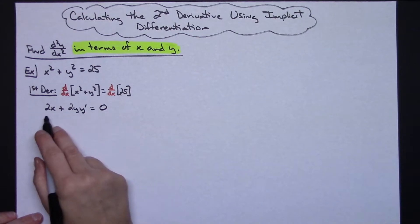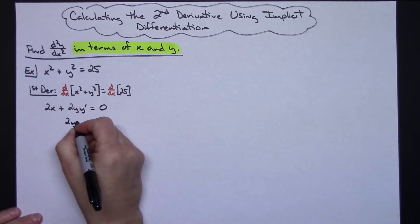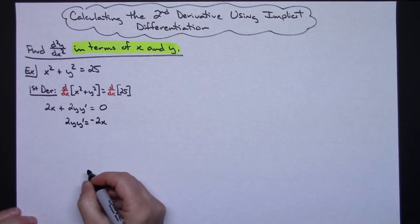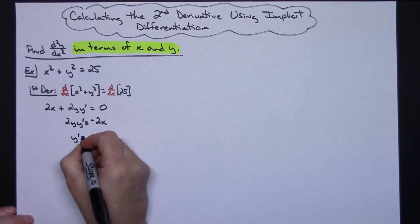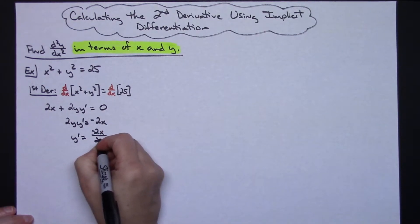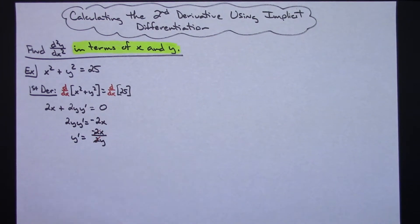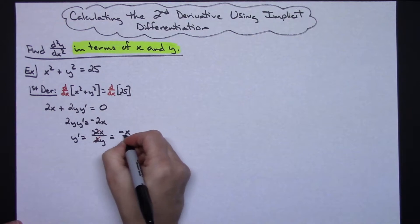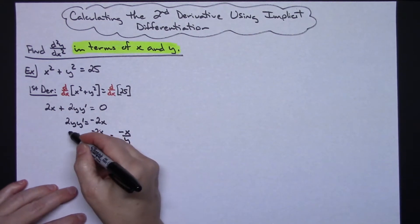Now I'm going to continue with the implicit differentiation — subtract 2x from both sides of my equation: 2y·y' equals negative 2x. I'm going to divide both sides by 2y, so y' equals negative 2x over 2y. Then there's some canceling going on that gives us the first derivative: y' equals negative x over y.